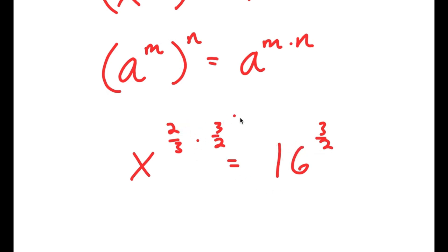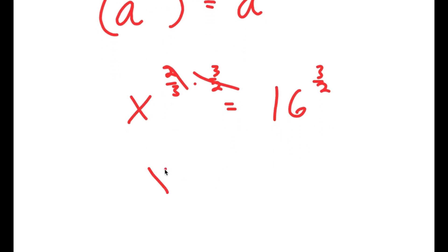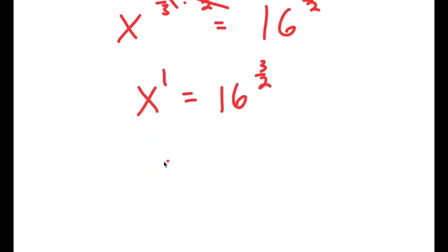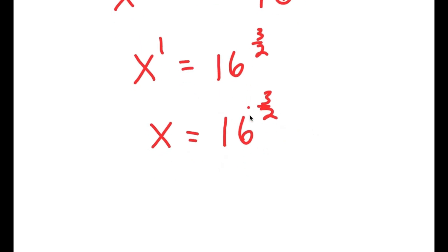Now, 2 over 3 and 3 over 2 are reciprocals, so they simply cancel out, leaving me with x to the power of 1 is equal to 16 to the power of 3 over 2. And x to the power of 1 is the same thing as x, so I get x is equal to 16 to the power of 3 over 2. However, we're not done yet because we still have to simplify this.